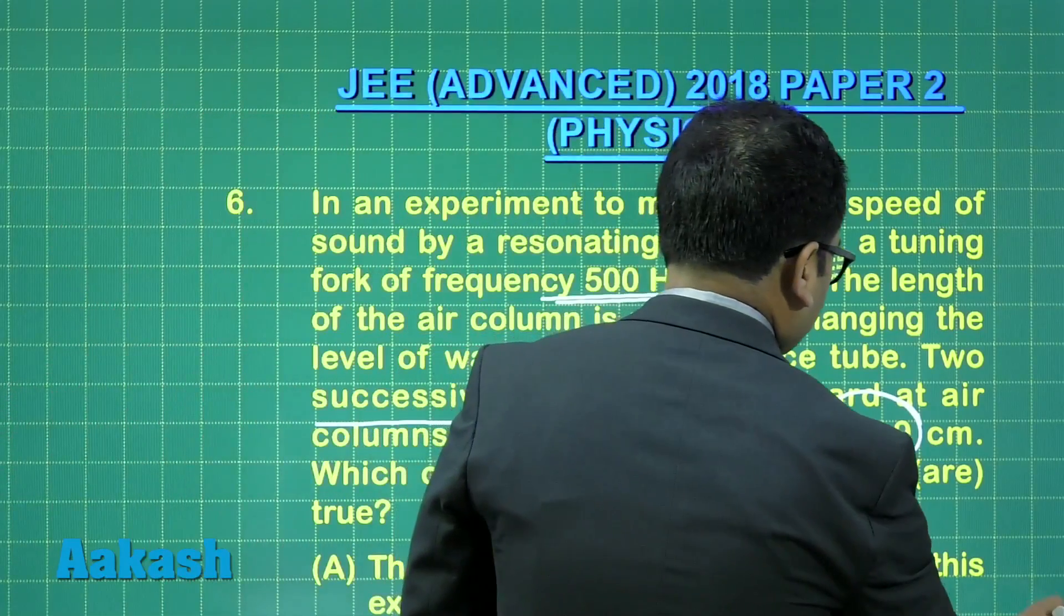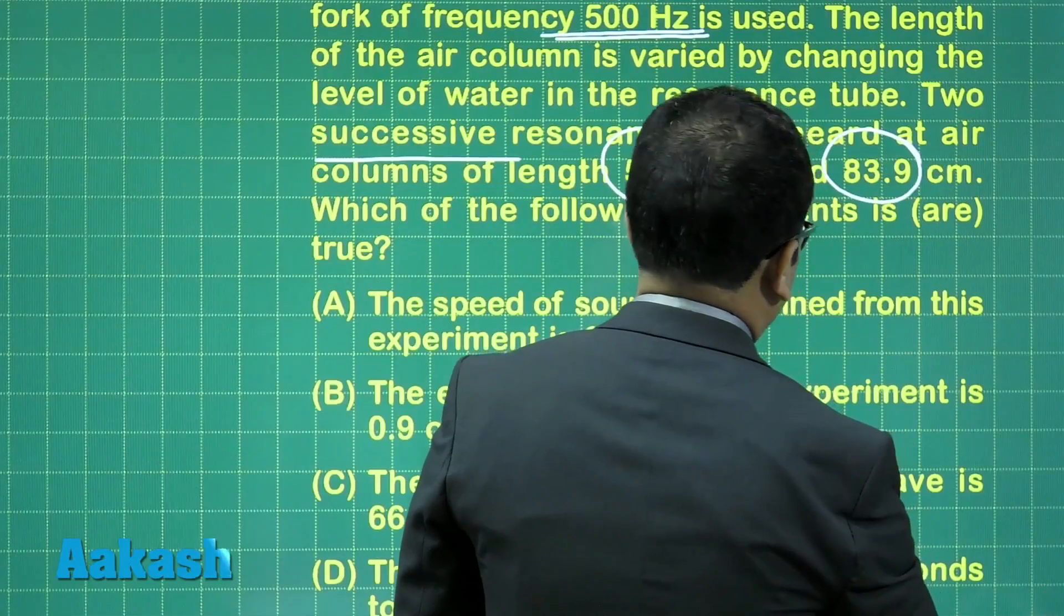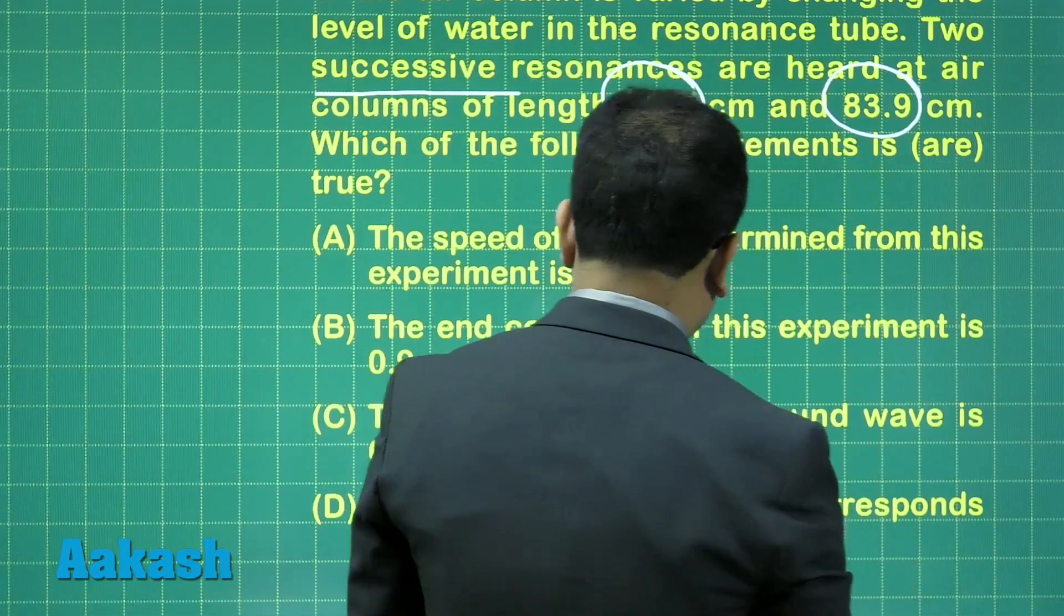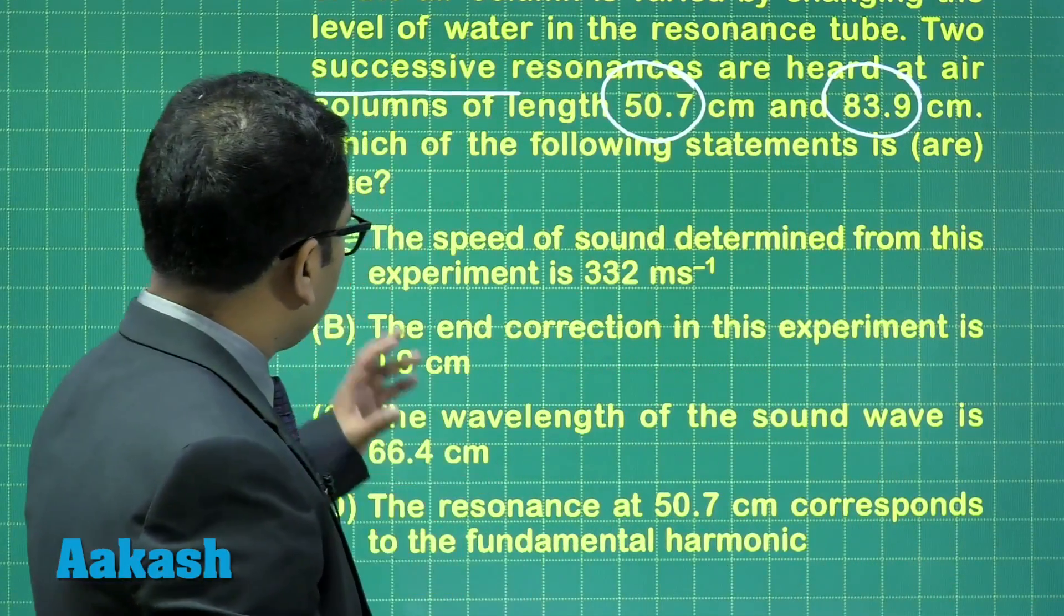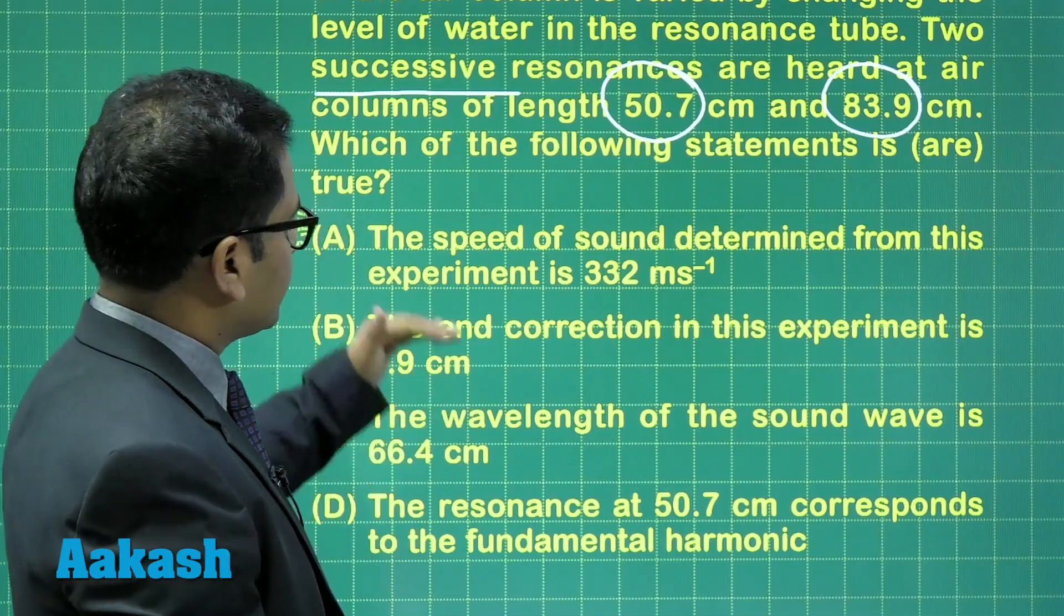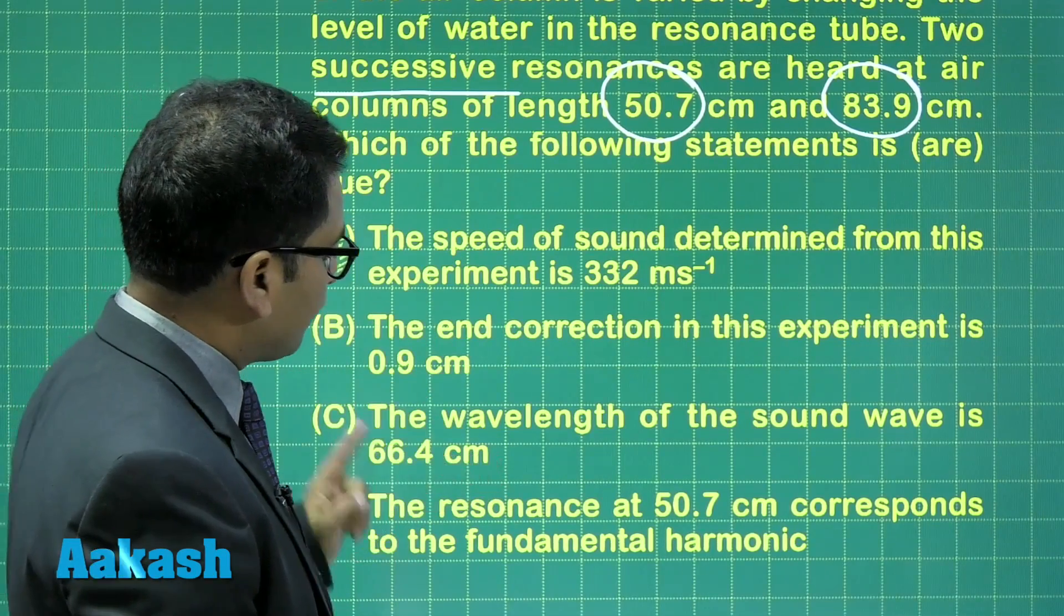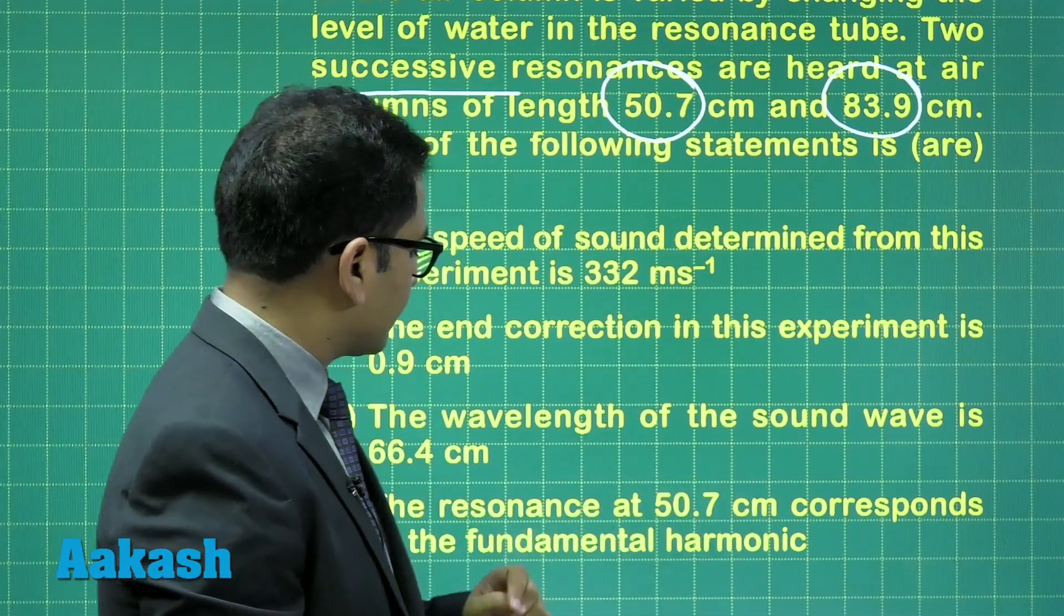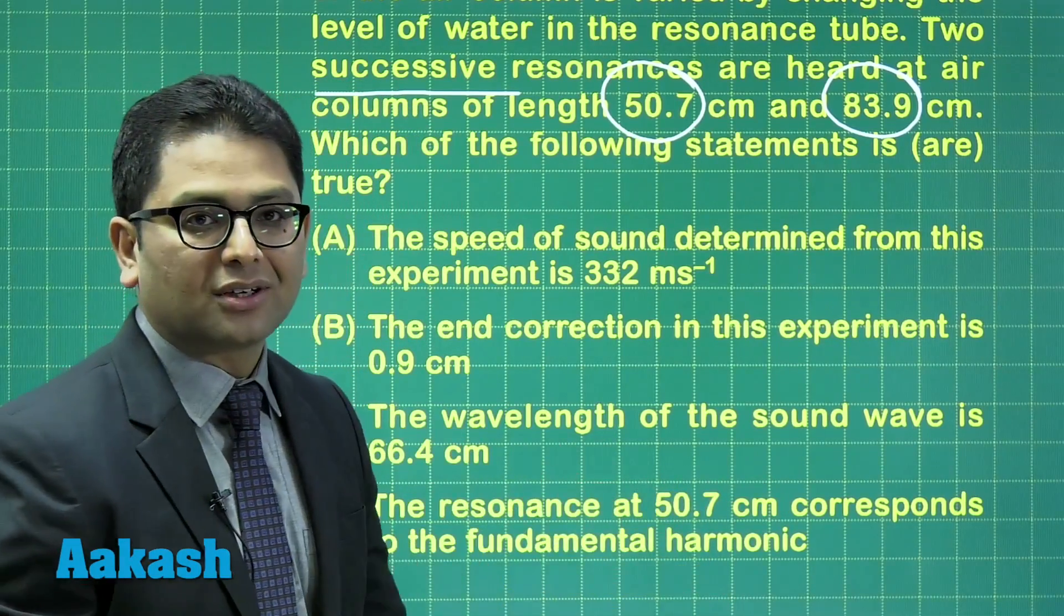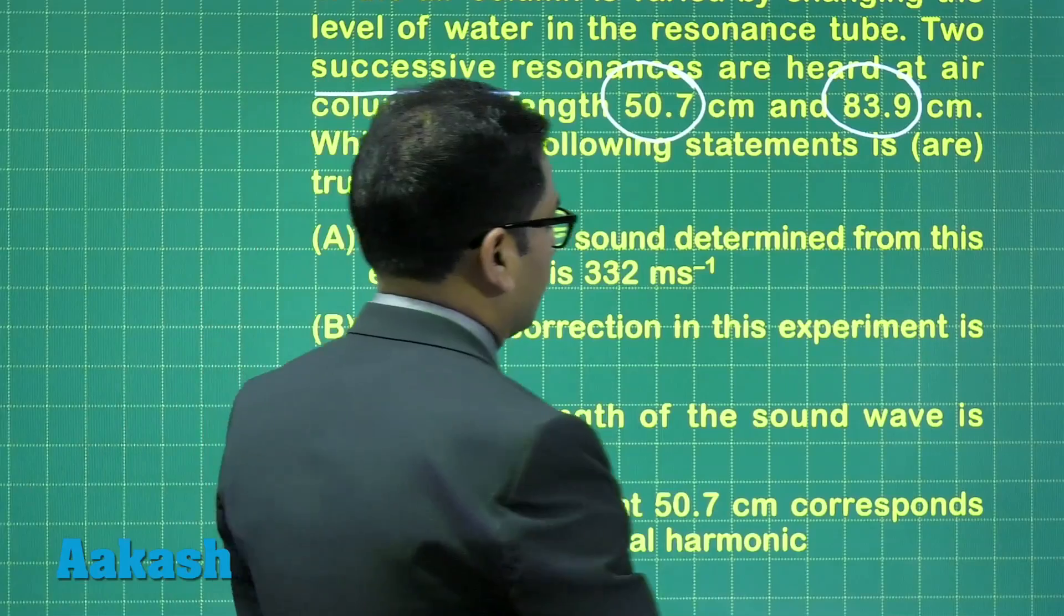Now, on the basis of this thing, 50.7, 83.9, let's try to see. The value that has to be calculated is speed of sound, end correction, wavelength, and whether 50.7 corresponds to the fundamental or not. The same stuff that we were talking about.